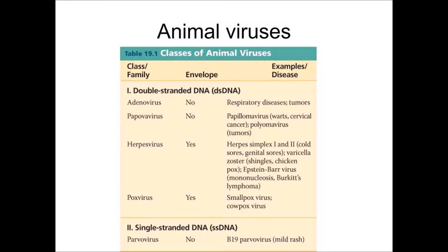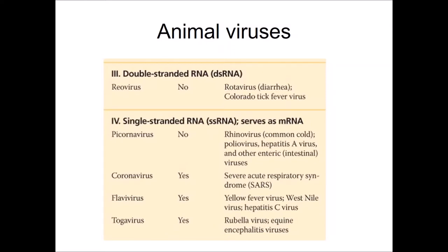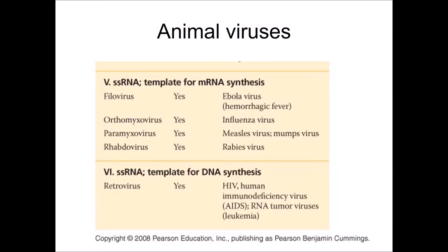Double-stranded DNA viruses include adenovirus, which causes some respiratory diseases and can also cause tumors. Single-stranded DNA viruses include parvovirus, which causes a rash. One double-stranded RNA virus is reovirus — these include rotaviruses that cause diarrhea, as well as Colorado tick fever virus. Single-stranded RNA viruses where the RNA serves as mRNA include picornaviruses, which includes rhinovirus causing the common cold. Some single-stranded RNA viruses use their RNA as a template for mRNA synthesis, like filoviruses, which include Ebola, or as a template for DNA synthesis — these are the retroviruses, which include HIV.